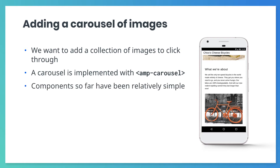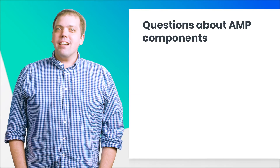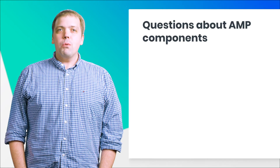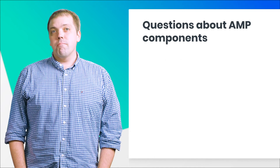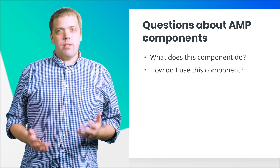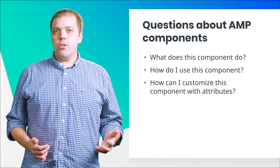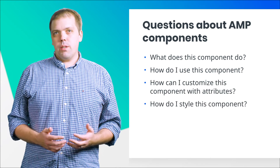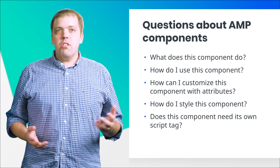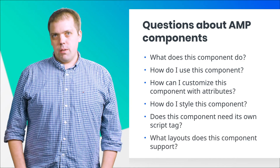The components we've used so far have been relatively simple, but for AMP Carousel we'll need to use the documentation. When we look at the documentation for AMP Carousel, we will look for answers to questions like these: What does this component do? How do I use this component? How can I customize this component with attributes? How do I style this component? Does this component need its own script tag? What layouts does this component support?